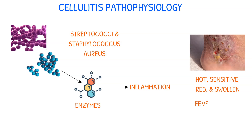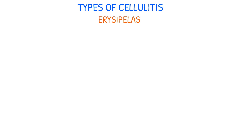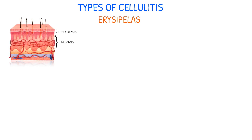Additionally, the patient may also have fever, malaise, and chills. One type of cellulitis is erysipelas, which primarily affects the dermis and epidermis skin layers.